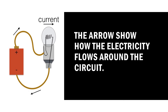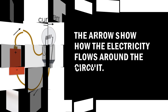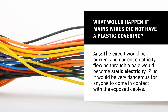The arrow shows how the electricity flows around the circuit. What would happen if mains wires did not have a plastic covering? The circuit would be broken and current electricity flowing through a cable would become dangerous. It would be very dangerous for anyone to come in contact with the exposed cables, and everything else would stop working.